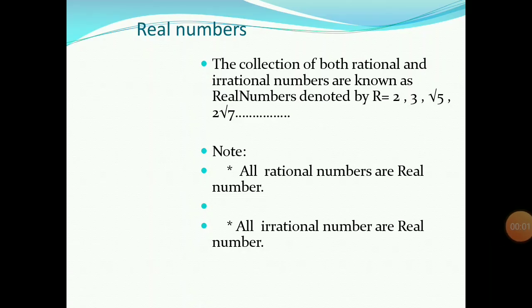Next is real numbers. The collection of both rational and irrational numbers is known as real numbers, denoted by capital R. All rational numbers are real numbers, and similarly, all irrational numbers are also real numbers.